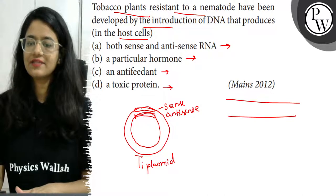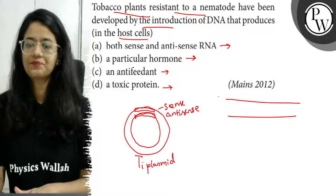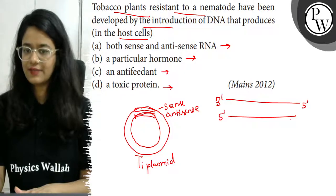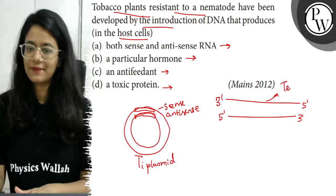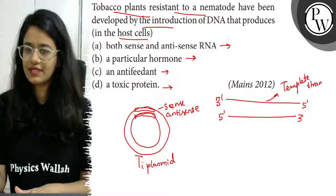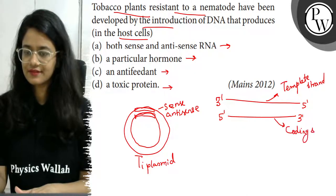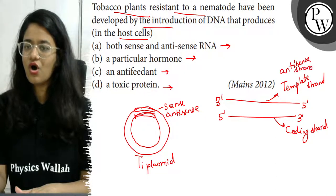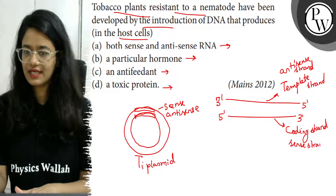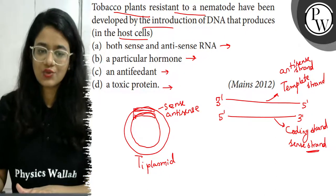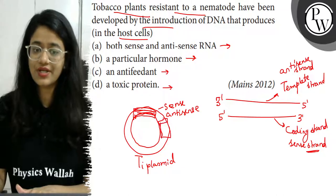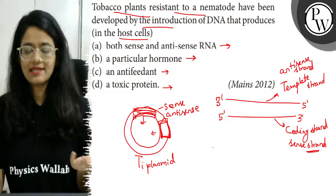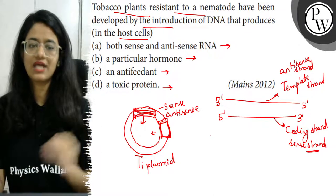What does DNA mean by RNA? So, from three prime to five prime, and five prime to three prime — this is going to be the template strand, and this is going to be the coding strand. Basically, what this means is: we incorporate genes such that two mRNAs are made — anti-sense mRNA and sense mRNA.